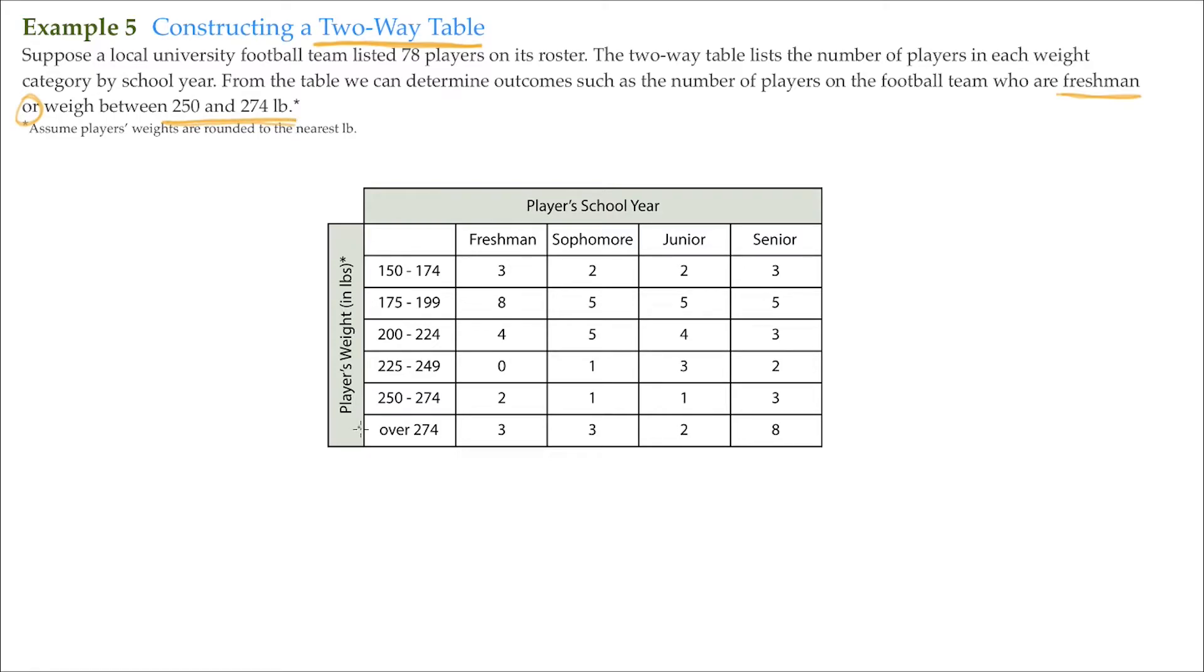So for our rows here, those go horizontal back and forth. The variable that identifies them is the player's weights. Those are the identifiers, and you can see we have these different categories: 150 to 174, 175 to 199, 200 to 224, and so on.